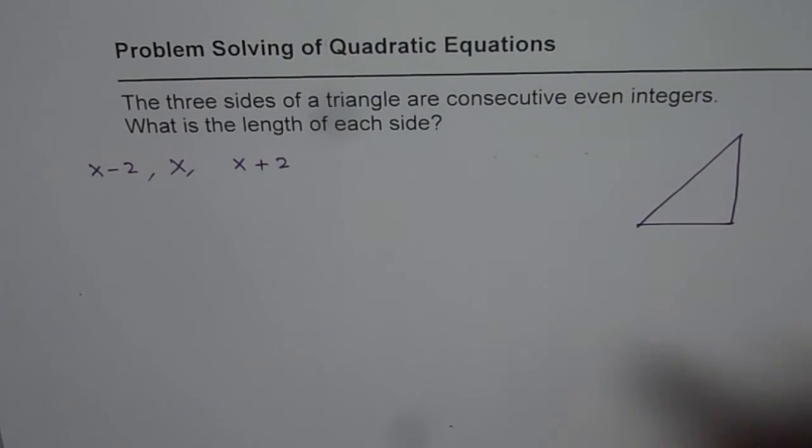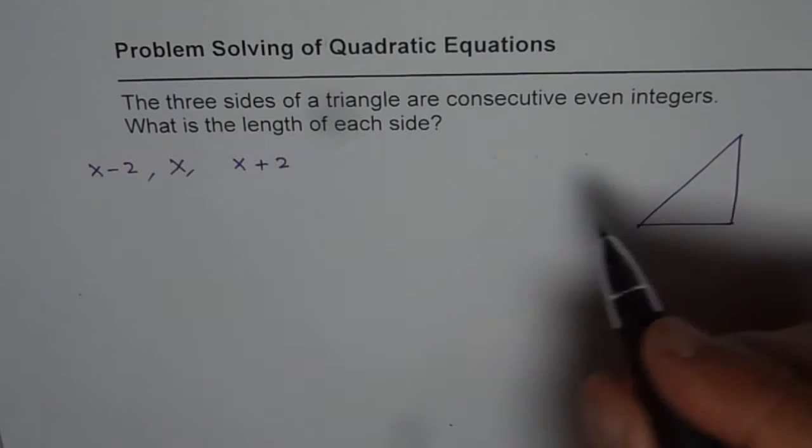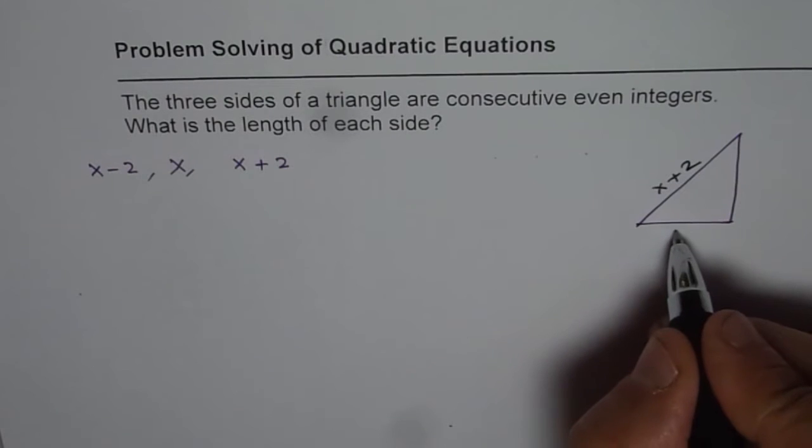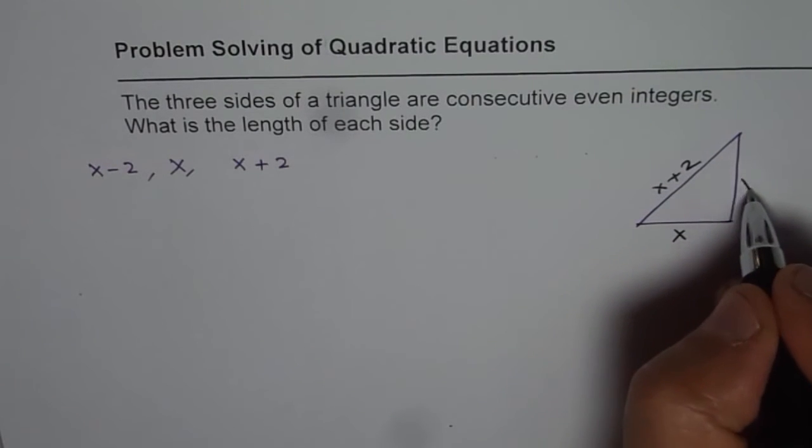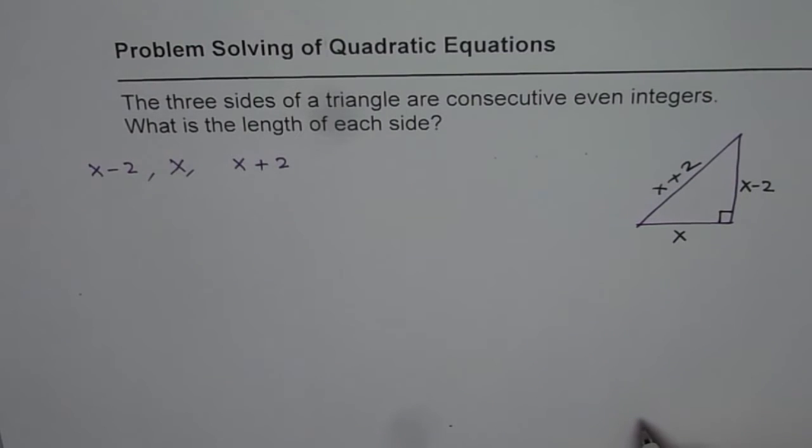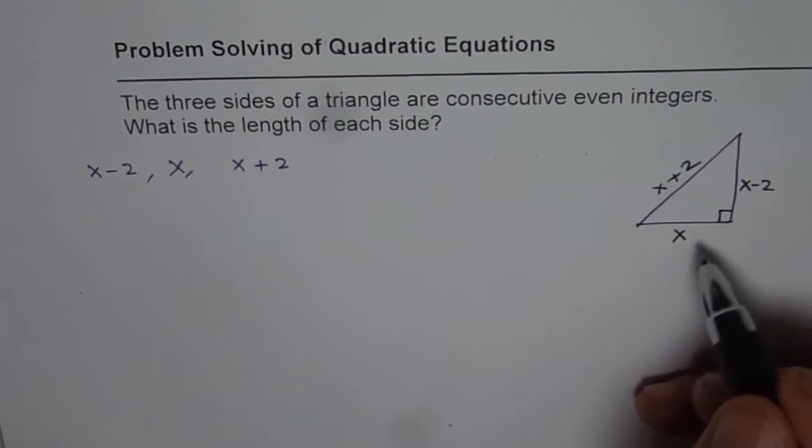And then check if we can get some value. The longest side is x plus 2. Let me write x plus 2 on this side. We have one leg as x, the other one as x minus 2. We are assuming it to be a right triangle. So let us say that is the triangle.